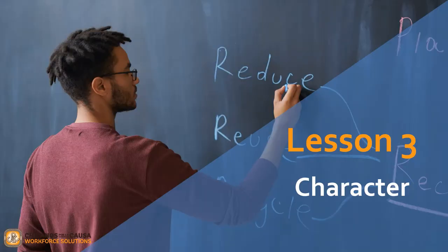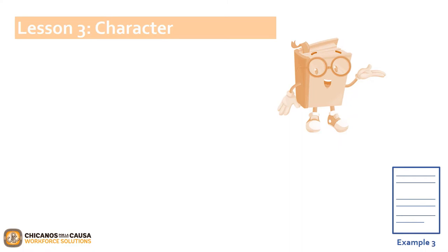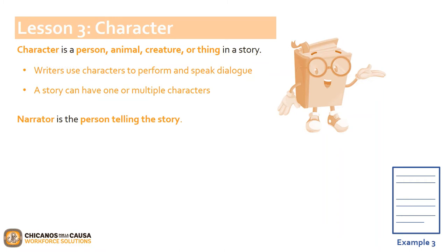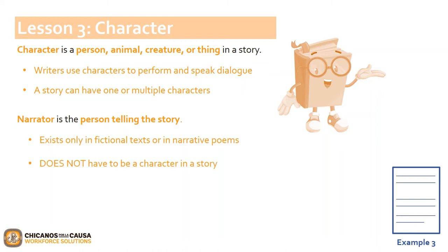We are now moving on to Lesson 3, Character. A character is a person, animal, creature, or thing in a story. Writers use characters to perform and speak dialogue. A story can have one or multiple characters. You can understand a character by noting what the narrator tells you directly. A narrator is the person telling the story. A narrator exists only in fictional texts or in narrative poems. A narrator does not have to be a character in a story.